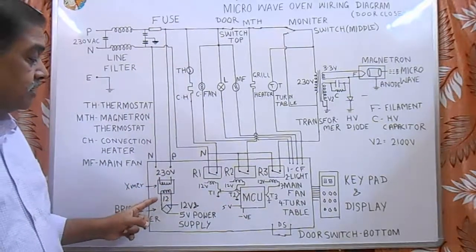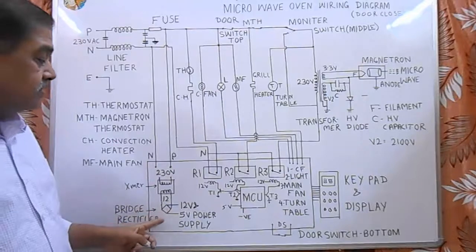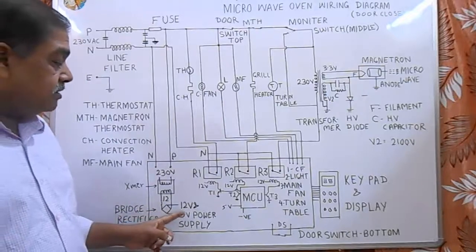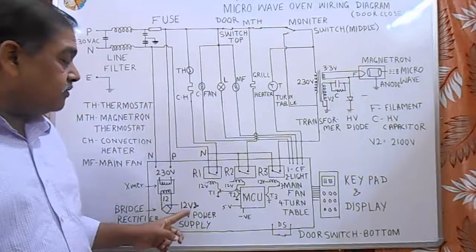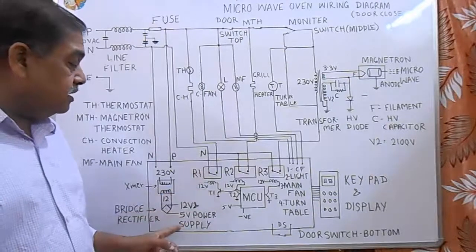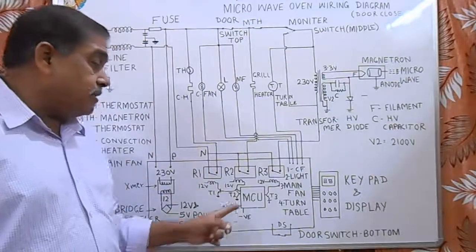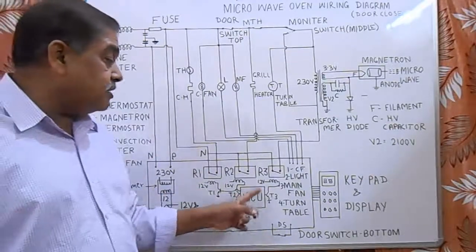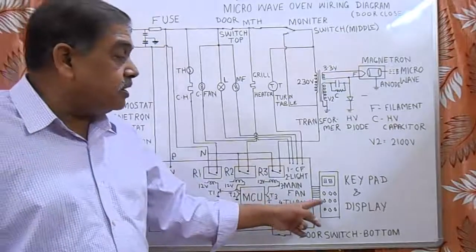It is a 230 volt transformer. It gives 12 volt output which is rectified, and then it produces two supplies: 12 volt supply for the relay and 5 volt supply for the microcontrol unit.